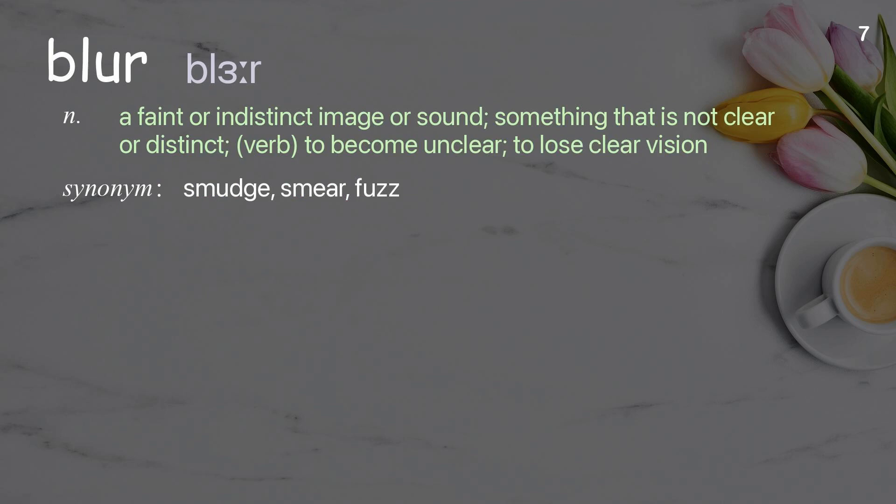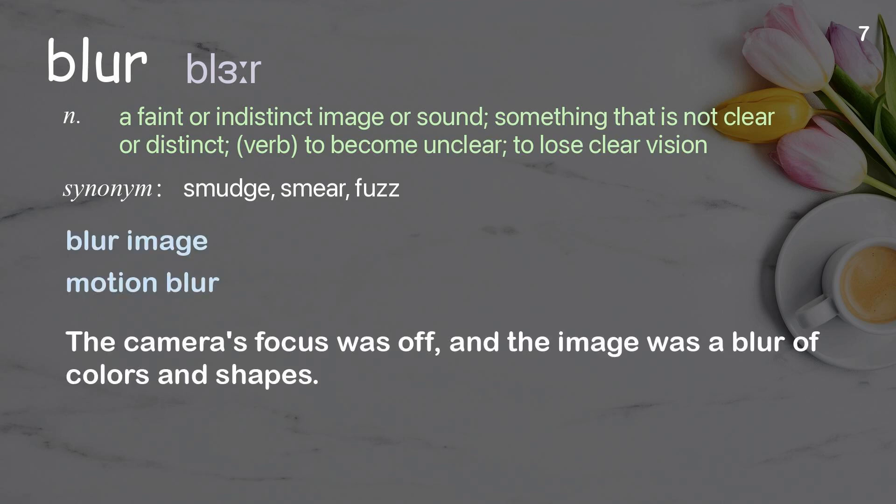Blur. A faint or indistinct image or sound; something that is not clear or distinct. Verb: to become unclear, to lose clear vision. Examples: Blur image. Motion blur. The camera's focus was off, and the image was a blur of colors and shapes.